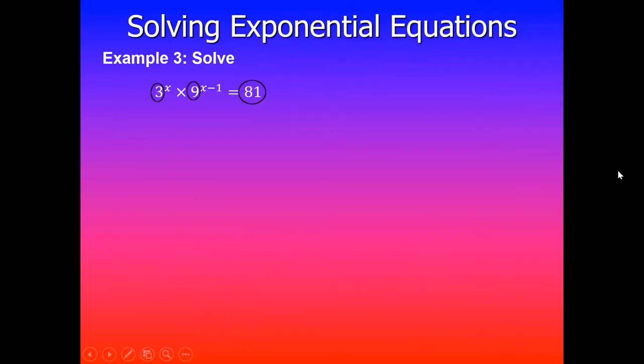Example here: Solve 3^x × 9^(x-1) = 81. In this case you can clearly see that we have different bases.